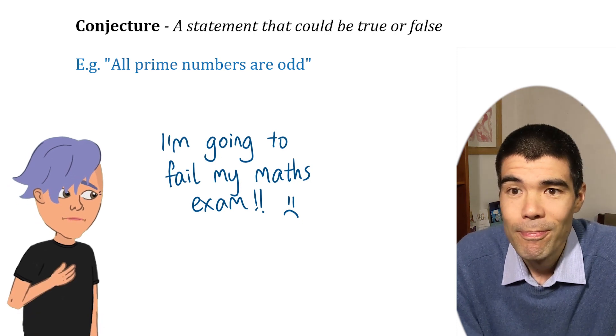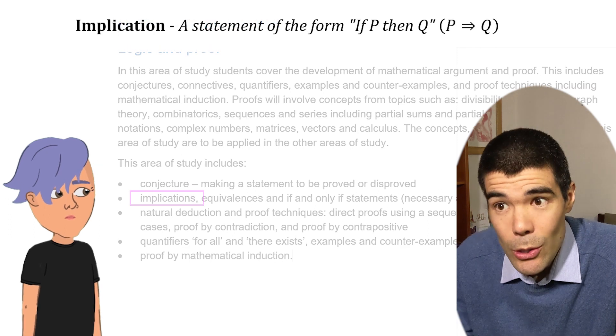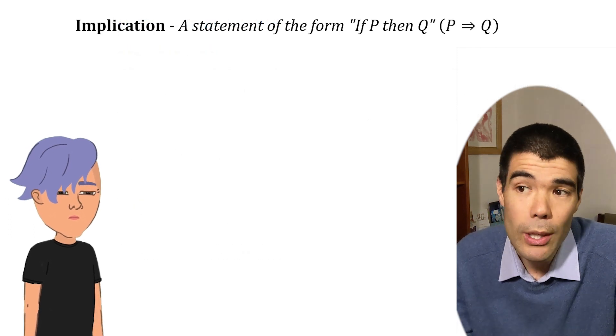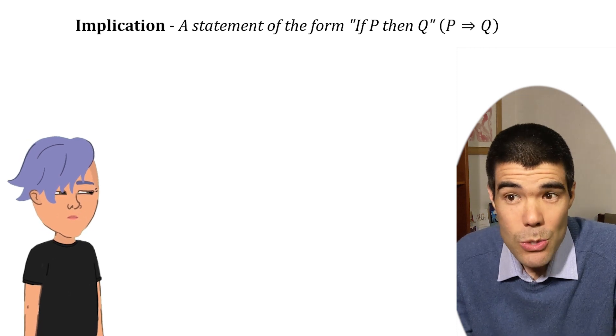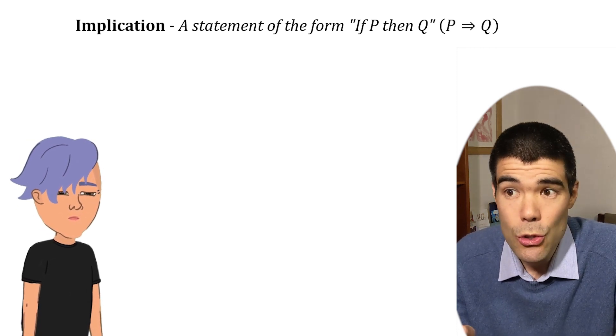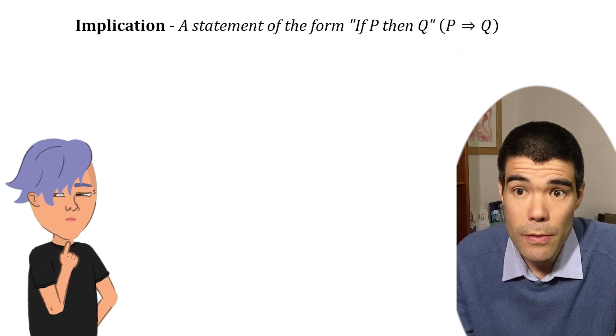Implication. P arrow Q means P implies Q, or if P is true, then Q is true. Interesting thing about this one is logically the implication is true, unless there's a case where P is true and Q is false.